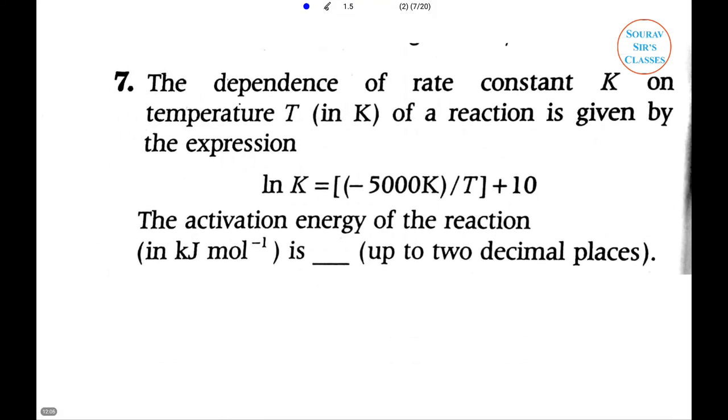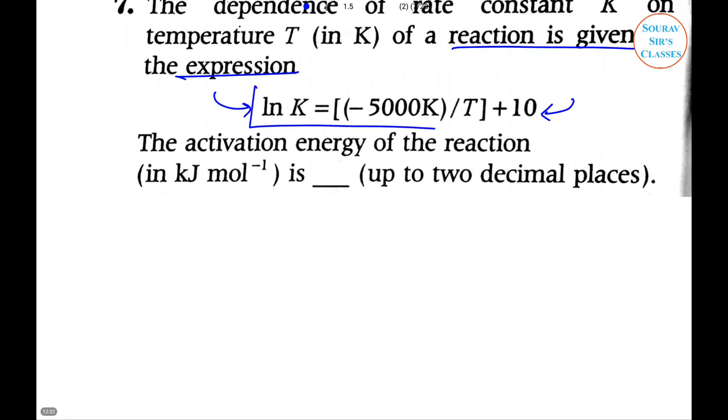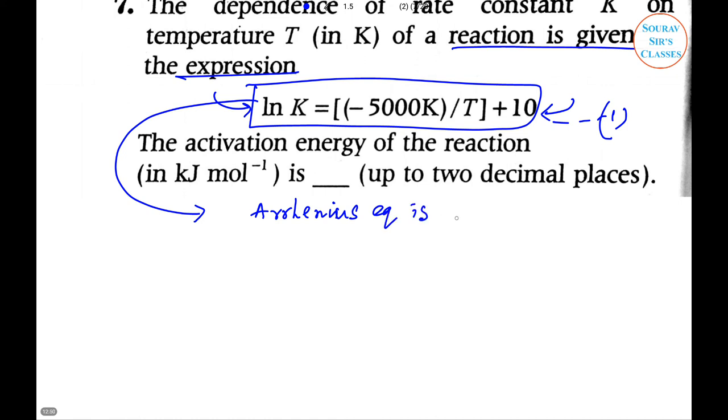The dependence of rate constant k on temperature T of a reaction is given by the expression ln(k) equals -(5000K)/T + 10. What is the activation energy of the reaction? From the given reaction, this is equation one. The Arrhenius equation is ln(k) equals ln(A) minus E_a/(RT), which is equation two.